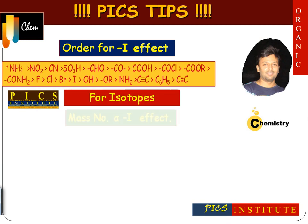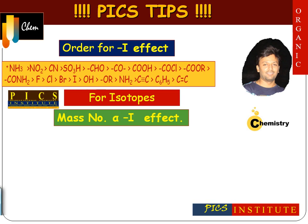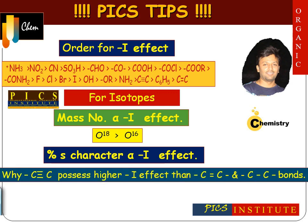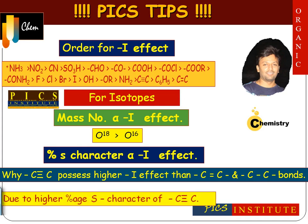For isotopes, mass number is directly proportional to minus-I effect. Also, percentage s-character is directly proportional to minus-I effect. For example, if the question is why a carbon-carbon triple bond possesses higher minus-I effect than a carbon-carbon double bond and carbon-carbon single bond, the answer is because of the higher percentage s-character of the carbon-carbon triple bond.